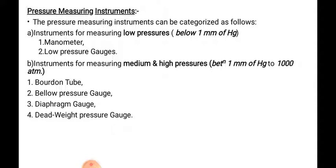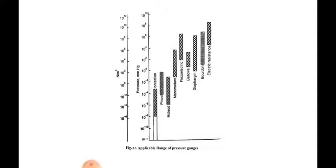For low pressure, the range is below 1 mm of mercury — pressures in that range are measured with manometers and low pressure gauges. For medium and high pressure between 1 mm of Hg to 1000 atmospheres, the instruments used are Bourdon tube, bellows pressure gauge, diaphragm gauge, and dead weight pressure gauge — four types of instruments for measuring medium and high pressure.